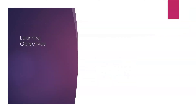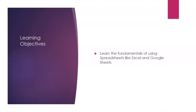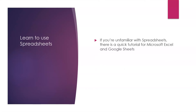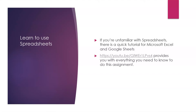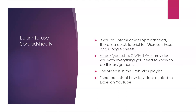There are two major learning objectives for this assignment. First is to learn the fundamentals of using spreadsheets like Excel and Google Sheets. The second is to use weighted means in a practical way. If you're unfamiliar with spreadsheets, there's a quick tutorial for Microsoft Excel and Google Sheets in video form at the provided link. It shows how to make formulas, enter information, and do formatting. The video is in our ProbVids playlist in Teams, or you can find it in the Probability Playlist on YouTube. There are also many other how-to videos on YouTube if you need additional information.